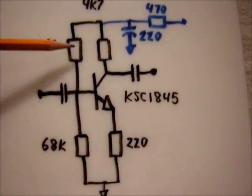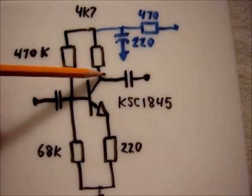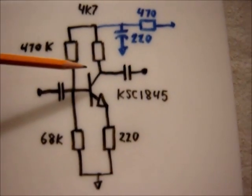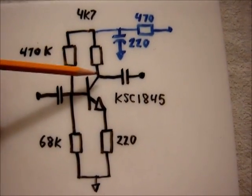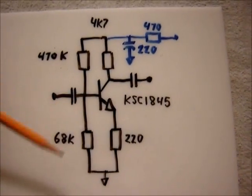It's a class A type amplifier in that it's biased at one half supply voltage or thereabouts. You measure from ground to the collector, it'll be around half the supply voltage.